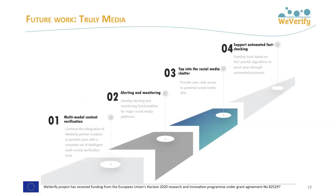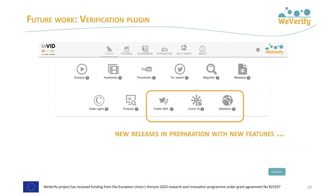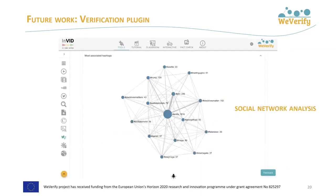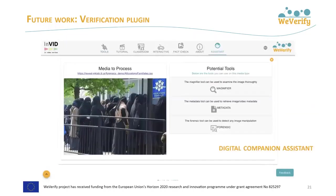Looking ahead, more important steps are foreseen in the future work of the TrulyMedia Workbench, including continued integration of tools from WeVerify partners, functionalities to support alerting and monitoring, adding more social media sources, and a view towards automatic fact-checking. The verification plugin is being enhanced by new WeVerify functionalities currently in beta testing. One of the main new features to be released soon is a Twitter social network analysis module that aims to hide technical complexity and automatically provide useful insights about disinformation propagation. Also in progress is work on a verification assistant, or digital companion — a chatbot to help and guide end users through the multiple verification tools available.